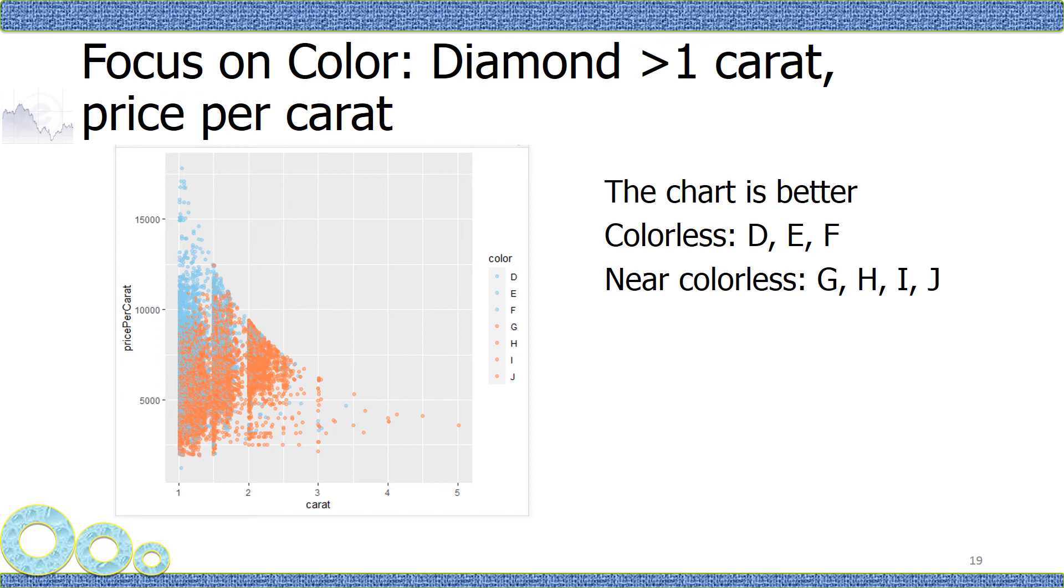So there are only two colors into two different groups. Now you can see the blue ones are higher in price. Orange ones are lower in price. So you can see color does make a difference in terms of price.